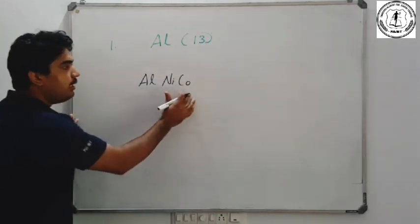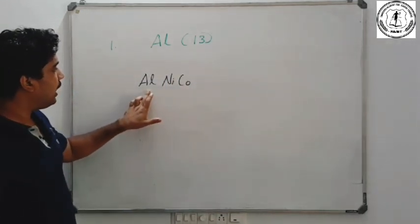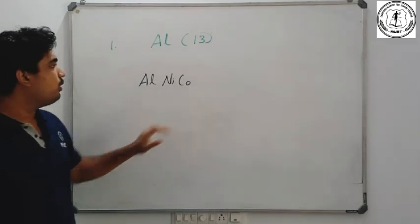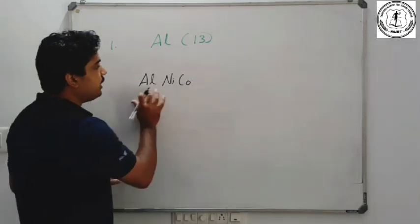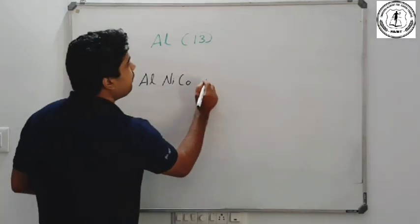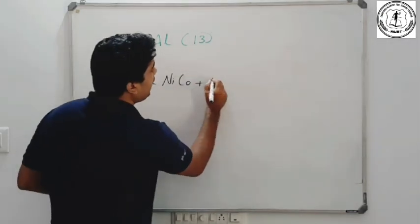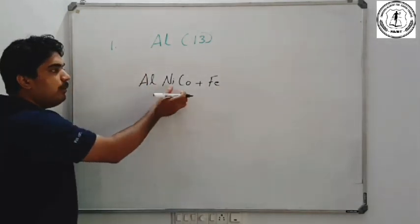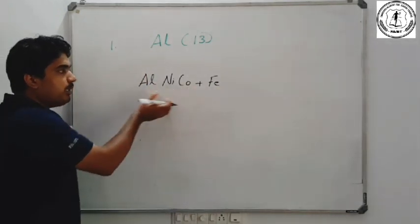This is Al-Nico — also called Alnico. This alloy comes to Al-Nic and Cobalt. Alnico is an alloy made from aluminium, nickel, and cobalt.